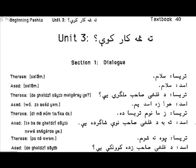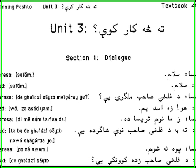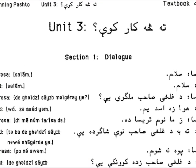We will begin Unit 3 with 'ta sikar kawai.' 'Ta' means 'you,' 'sa' means 'what,' 'kar' means 'work,' 'kawai' means 'doing.' So the phrase means 'what work are you doing?' or 'what work do you do?' — 'ta sikar kawai.'